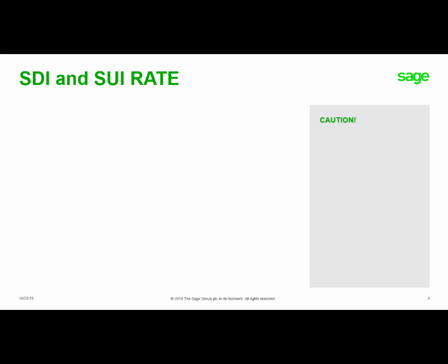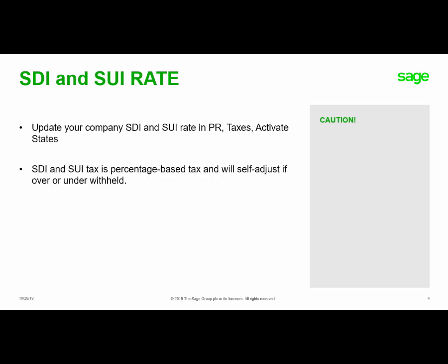Next, you should review and update your company SUI and SDI rates. The SUI rate is provided to you by your state. You will need to update your Sage BusinessWorks rate in Payroll, Taxes, Activate States. If your state has an SDI tax rate, you will also update the new tax rate in Activate States. The SDI and SUI taxes are percentage-based taxes. If you did not receive your new rates prior to processing your first payroll and the taxes were either over or under withheld, the program will automatically self-adjust the tax liability on the next payroll checks.